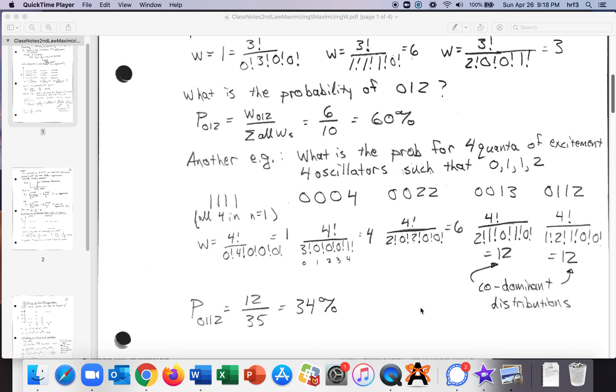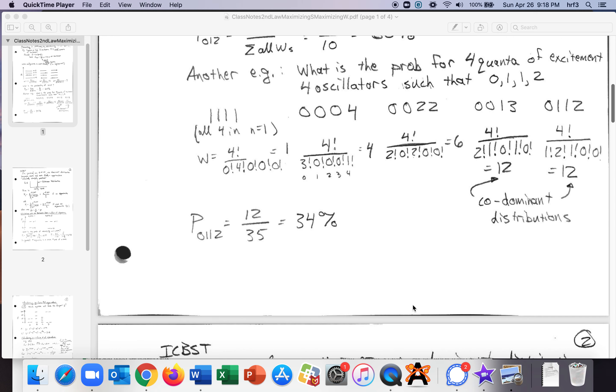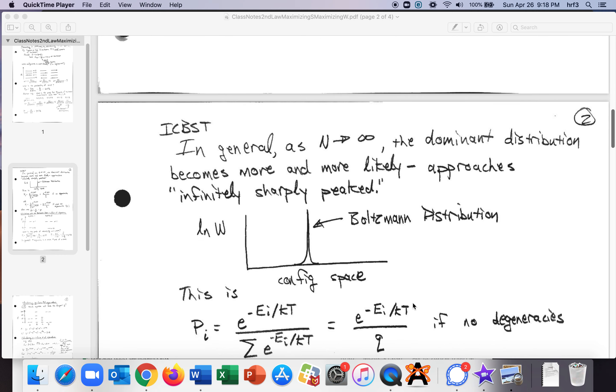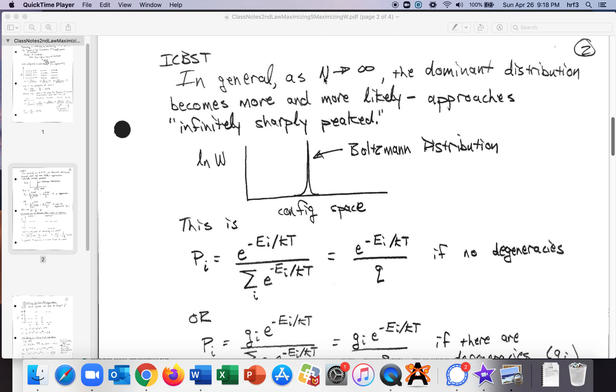So these two distributions are equally likely and if you add them all together one plus four plus six plus 24 that's 35 so 12 out of 35 there's a 34 percent probability and so on so those are just some examples. But it can be shown that as we get to n approaching infinity or maybe approaching a huge number like avogadro's number the dominant distribution becomes more and more likely and approaches an infinitely sharp peak and that dominant distribution it can be shown that is the Boltzmann distribution.